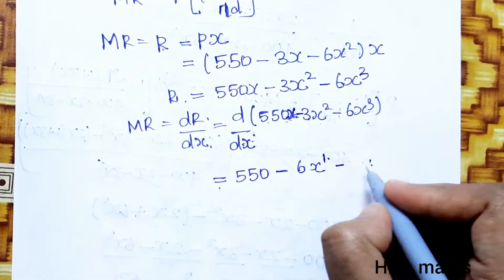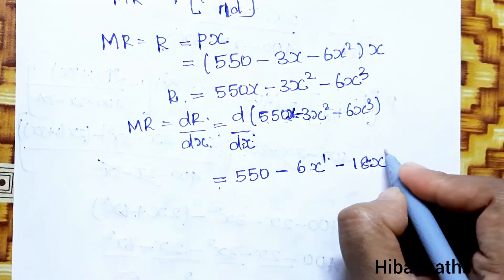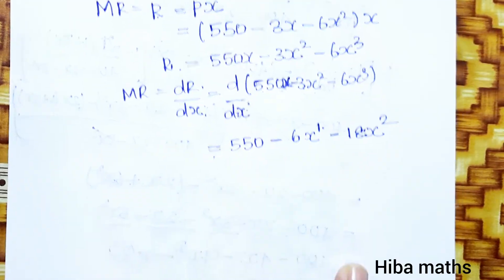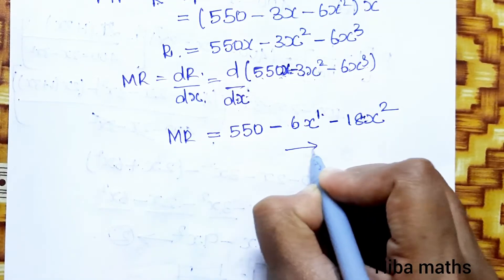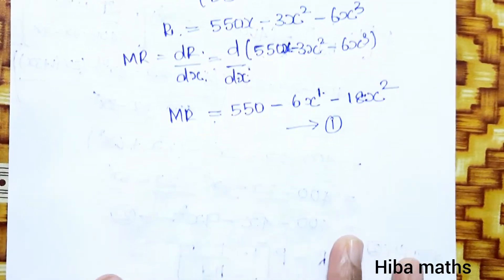Clear? This is the MR value. This is equation one.